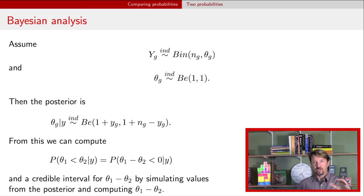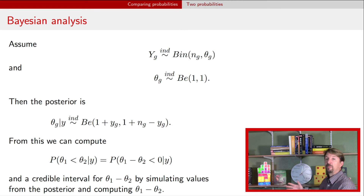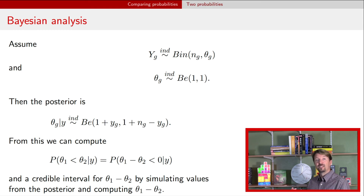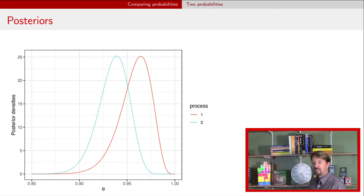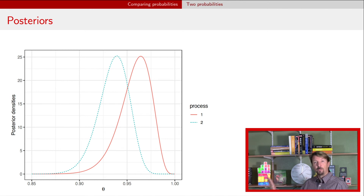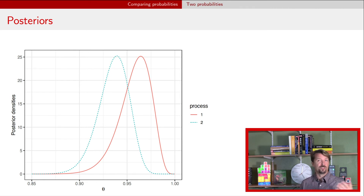Going forward, we're going to show those posterior densities and also look at how you might calculate probabilities like: what's the probability that theta 1 is less than theta 2 given the data? That posterior probability can be interpreted as a statement about your updated belief given this model and these priors. Here's an example of those two posteriors for the two different processes, showing what the probability of success looks like. This is where you can find posterior expectations and posterior credible intervals for each of the two independently.